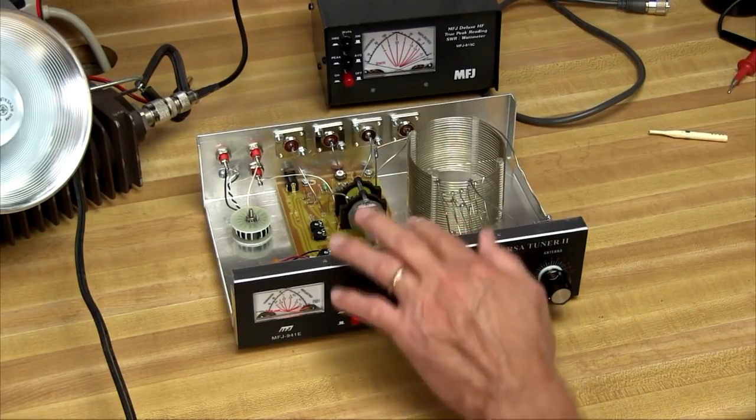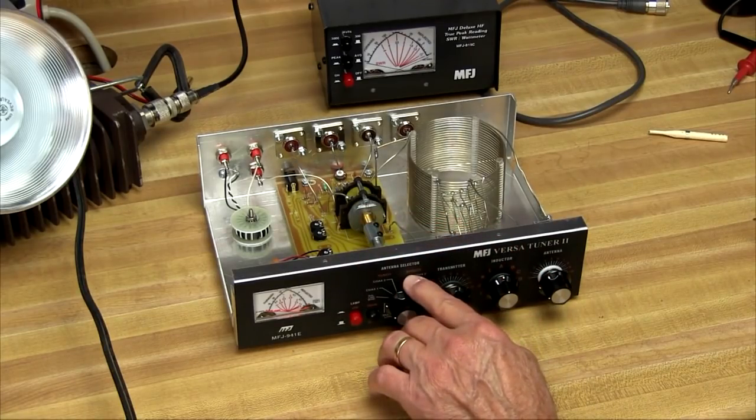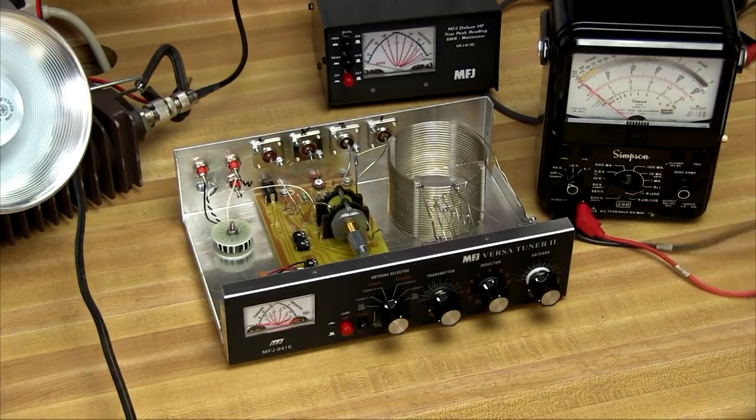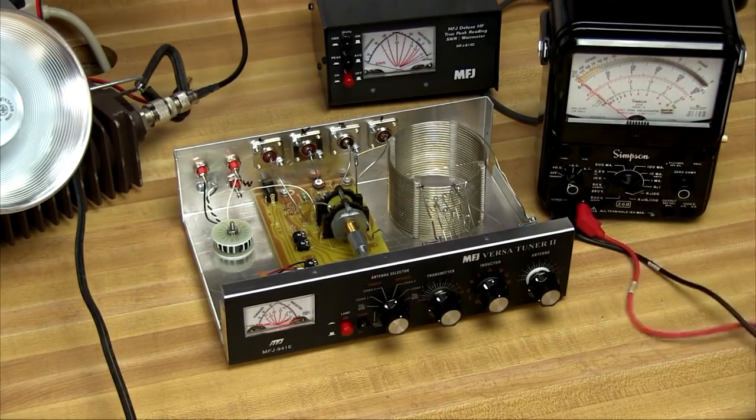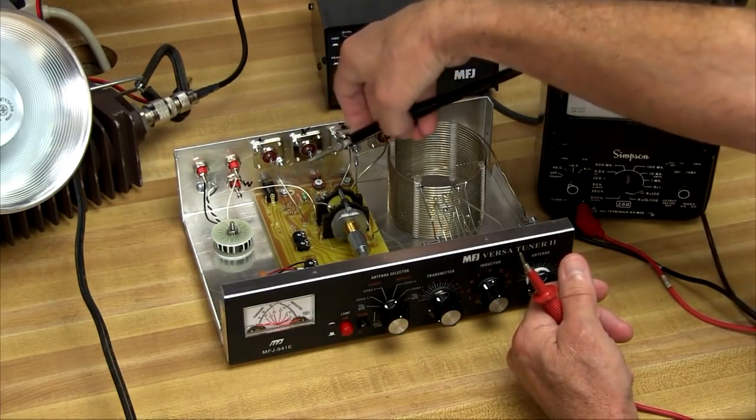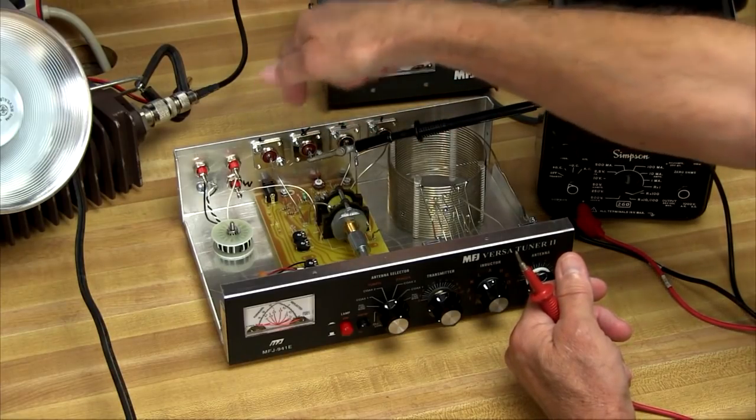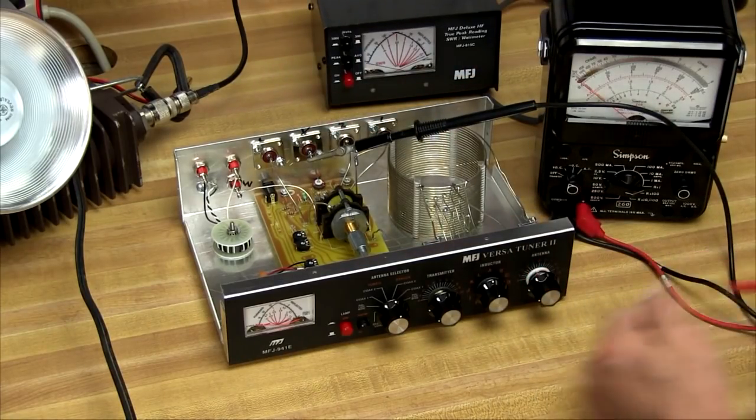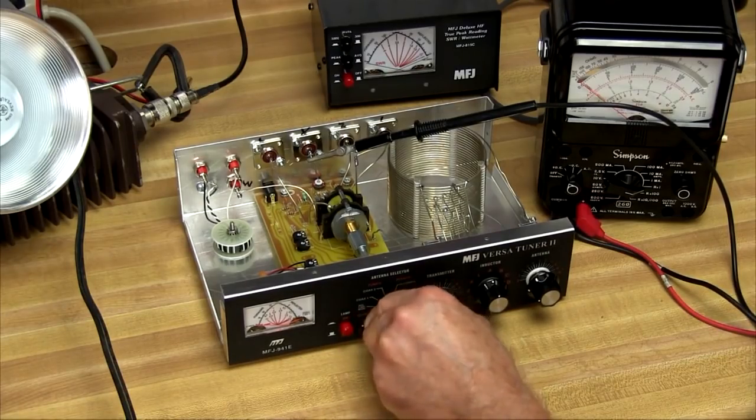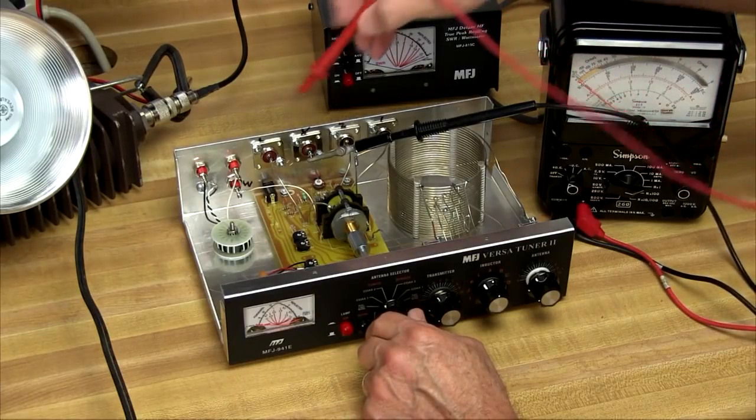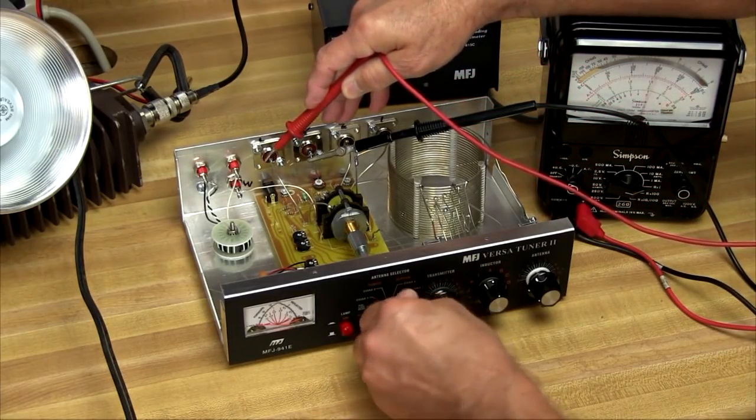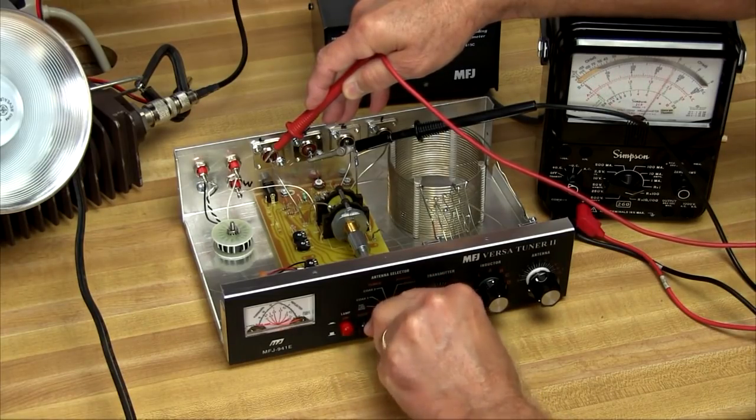The next test involves checking out the RF switching here in the bypass mode. I'll use the old Simpson 260 here for this test. We're going to put it on Rx1. First, I'm going to connect to the transmit lead—that's that one right there. I could connect it in the back; I'm just going to use an alligator clip. We want to check it to the dummy load, so I'll turn the switch all the way over to dummy load. I'll touch the meter here to the dummy load connector, and we've got continuity there and in none of the other positions.